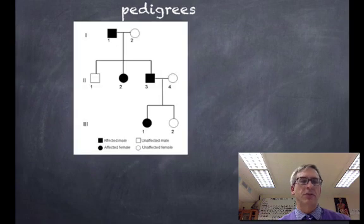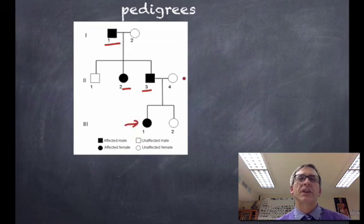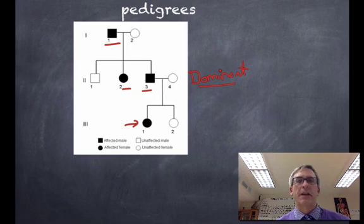This next pedigree looks a little bit different. We have an affected male in the first generation, had two children, a female and a male. And this male right here had a child with it as well. If it doesn't skip generations, a parent has it in every generation, it's most likely a dominant form of inheritance.